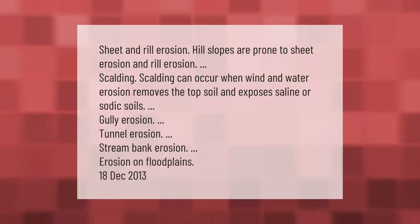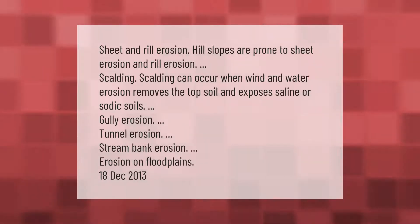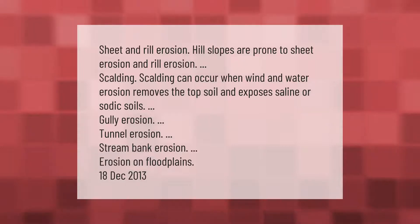Hill slopes are prone to sheet erosion and rill erosion. Scalding can occur when wind and water erosion removes the topsoil and exposes saline or sodic soils. Other forms include gully erosion, tunnel erosion, stream bank erosion, and erosion on floodplains.